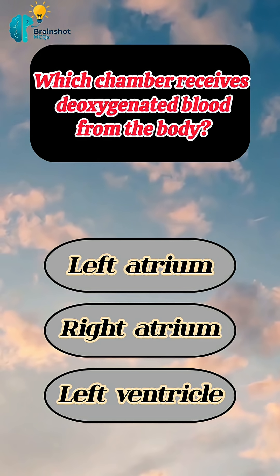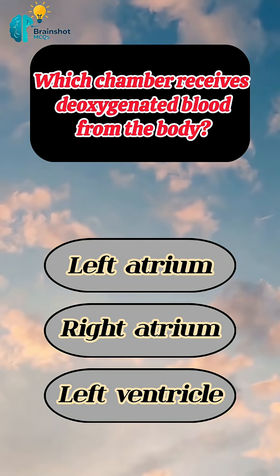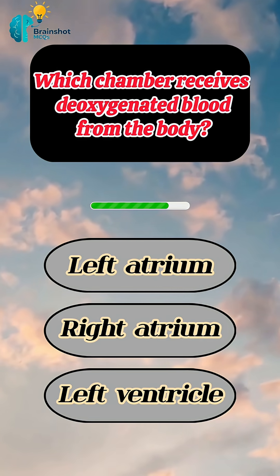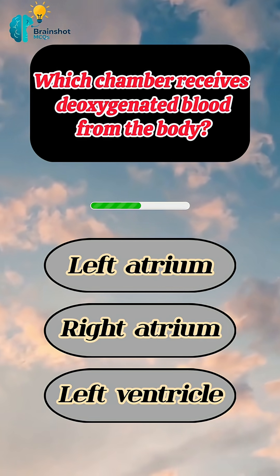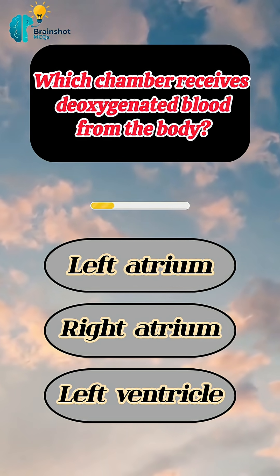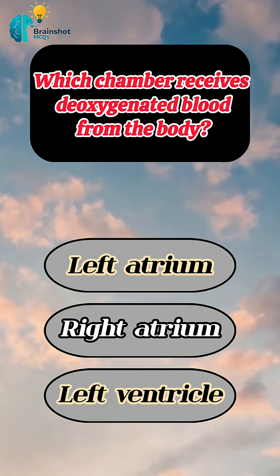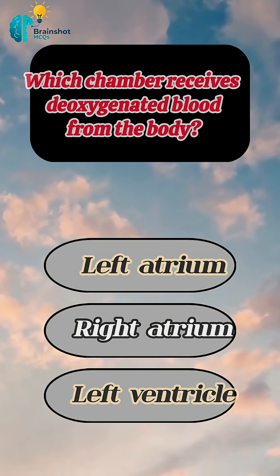Which chamber receives deoxygenated blood from the body? Correct answer: the right atrium.